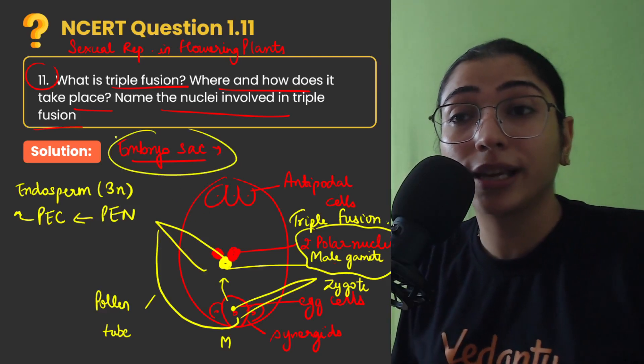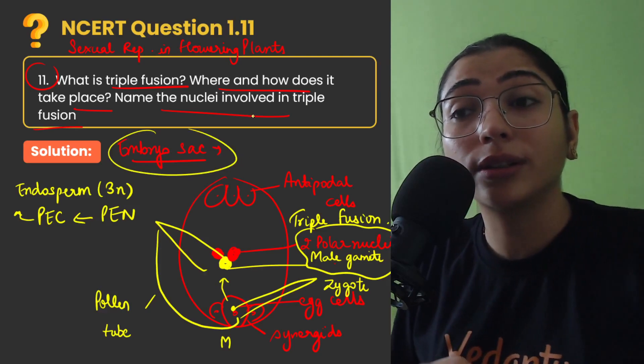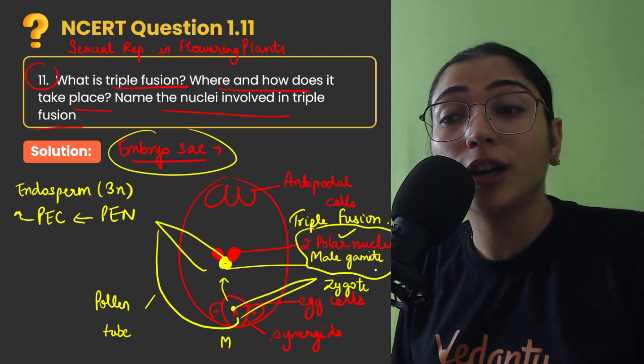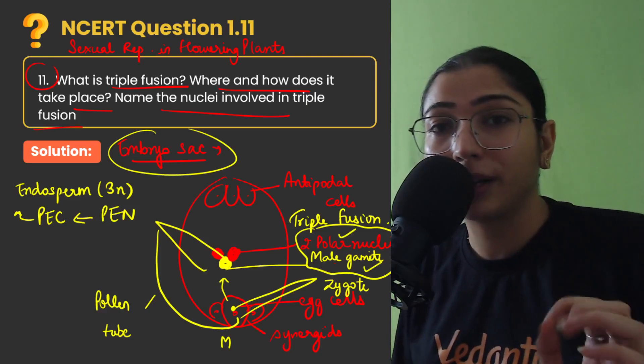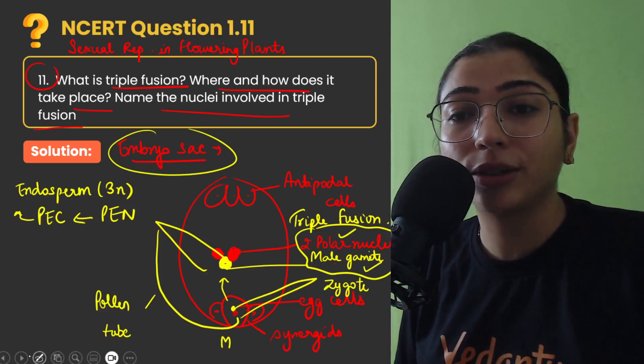Where has this event happened? It has taken place in the embryo sac. How many nuclei and which nuclei are involved? There are 2 polar nuclei and 1 male gamete involved in the fusion of triple nuclei. So I hope it is clear, let's write the answer now.